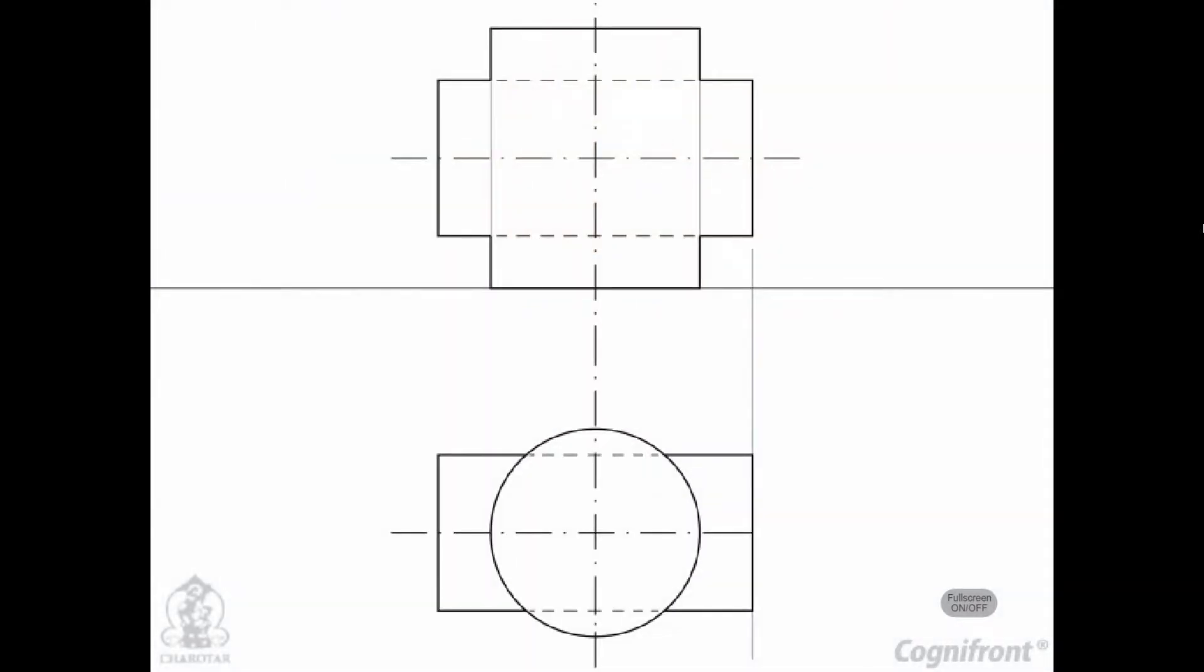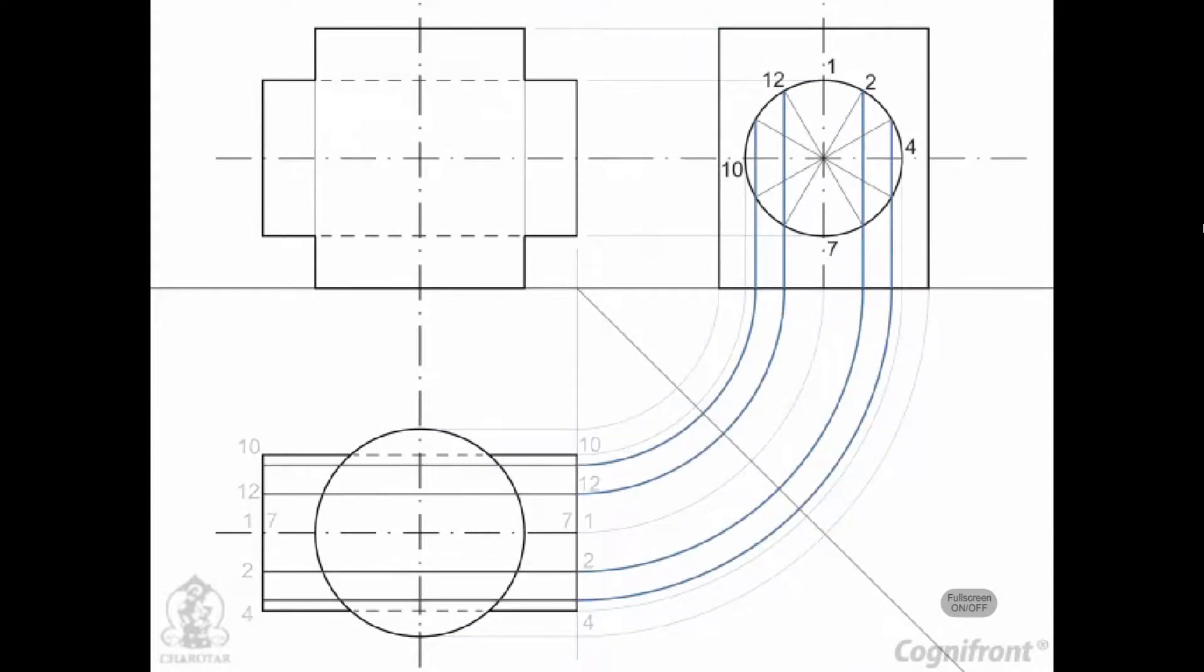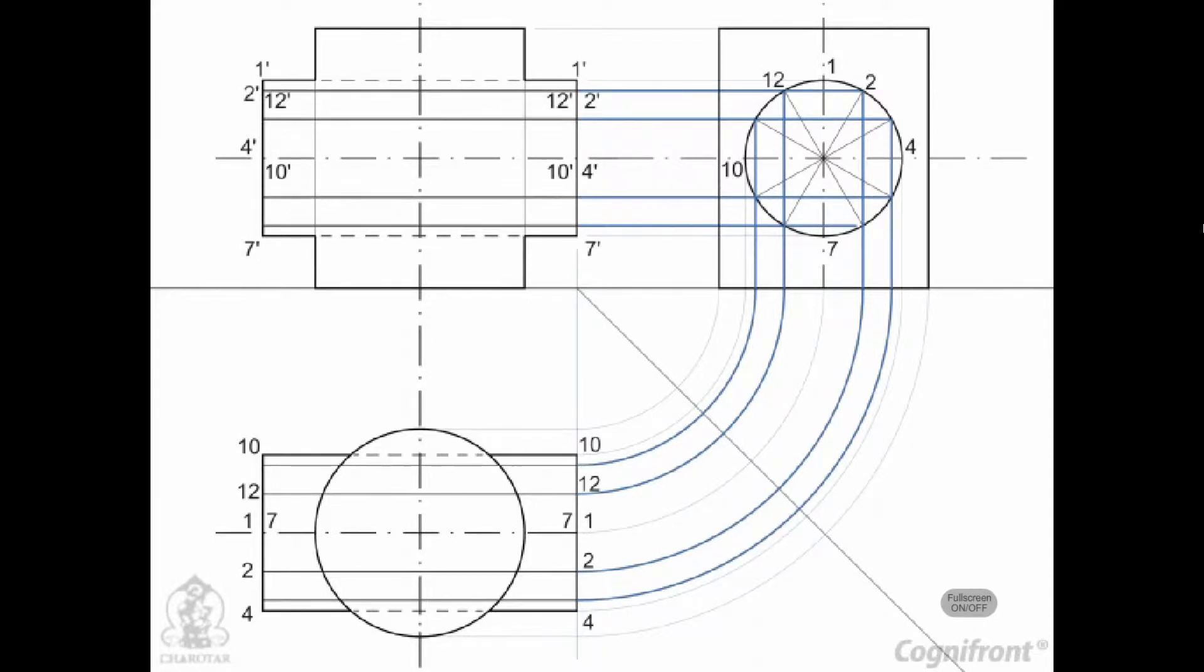Draw the front view and the top view and show lines for 12 generators in the horizontal cylinder in both views.